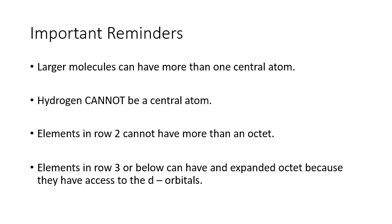A couple of important reminders. Larger molecules can have more than one central atom. So if you're dealing with your carbon containing molecules, each carbon could be a central atom. You can look at them one at a time. Hydrogen cannot be a central atom. Because it only wants a duet. It only wants two electrons. So it is always on the outside of our Lewis structures. Elements in row two cannot have more than an octet. So the maximum that they can have is eight. But if we move into row three or below, then you can have an expanded octet. You can have more than eight electrons. If it is in row three or below. And the reason for this is because they have access to empty d orbitals. They can start putting electrons into the d orbitals and have more than eight electrons.